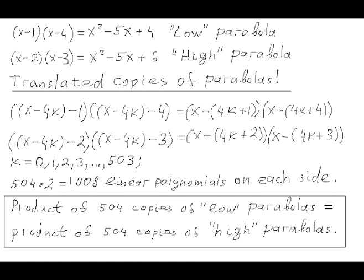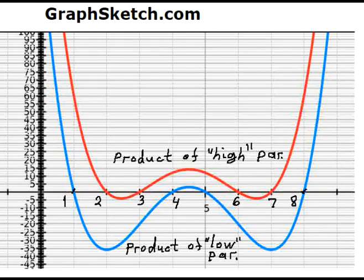The hypothesis is that this equation has no real solutions, because for every real number x, the value of the high polynomial is greater than the value of the low polynomial. This diagram shows two curves: the red curve is the graph of the product of functions of two adjacent high parabolas — the high polynomial — and the blue curve is the graph of the product of functions of two adjacent low parabolas — the low polynomial.